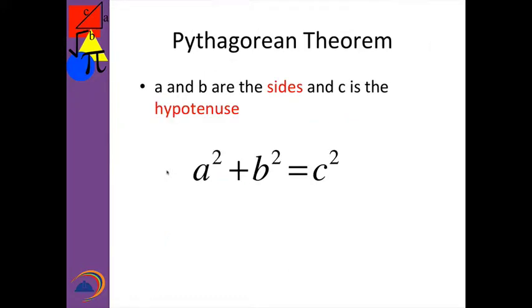Now here's the Pythagorean theorem. A and B are the sides of the triangle, and C is the hypotenuse. The formula is A squared plus B squared equals C squared. I've had a lot of students who could recite that but not really know what it meant. So let's make sure we all know what this means. Make sure you filled in that A and B are the sides — they're squared and added together — and the hypotenuse is by itself on one side of the equation.